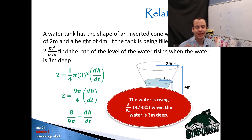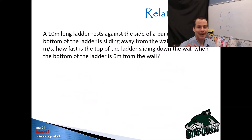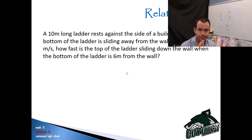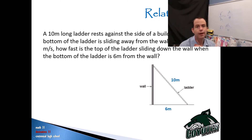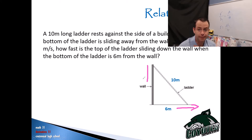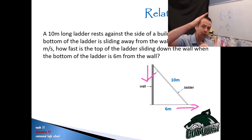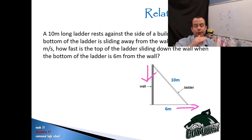The ladder type question: a 10-meter long ladder rests against the side of a building. If the bottom of the ladder is sliding away from the wall at a rate of 1 meter per second, how fast is the top of the ladder sliding down the wall when the bottom is 6 meters from the wall? Drawing a picture: a ladder against a wall. If the bottom slides out, by default the top must come down, because the ladder is a fixed length. We're asked for the rate the top is coming down.